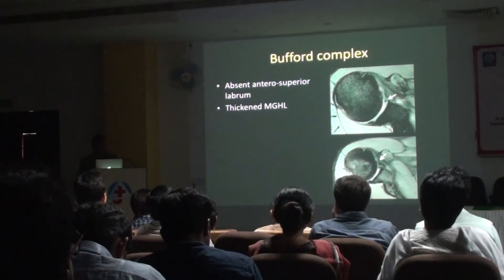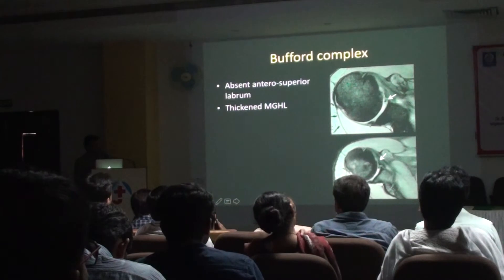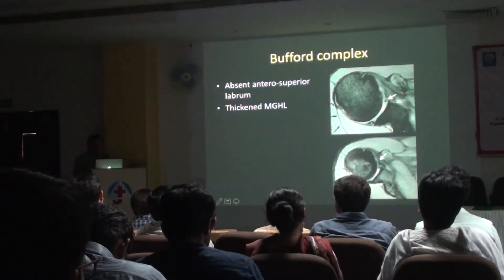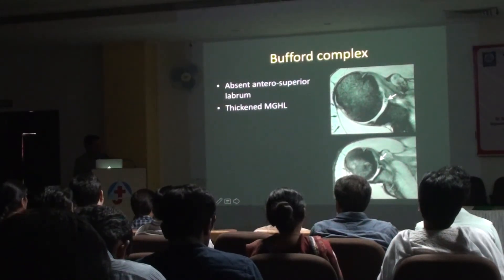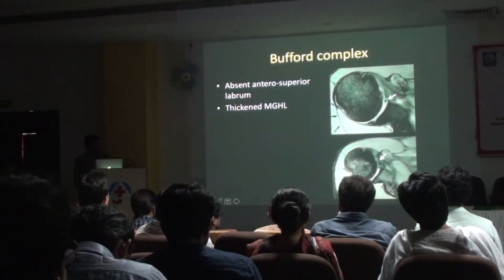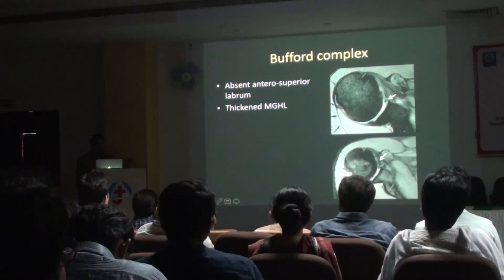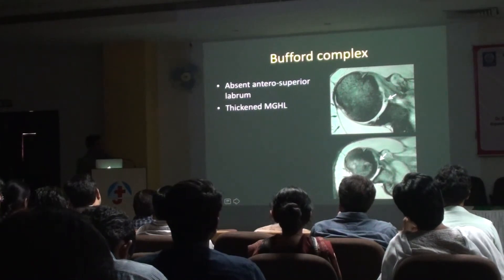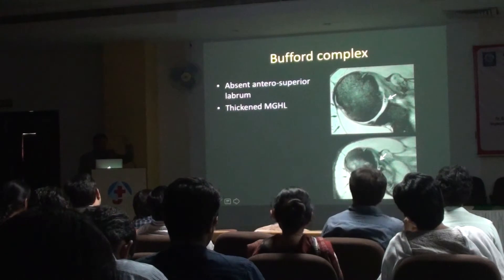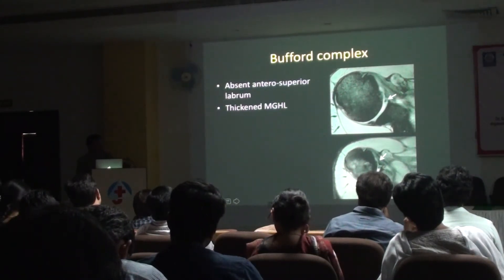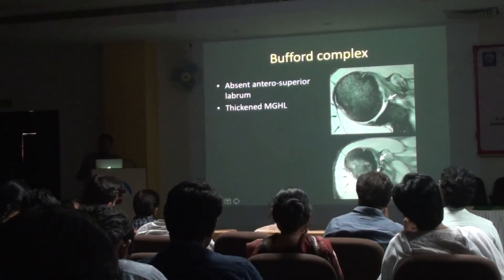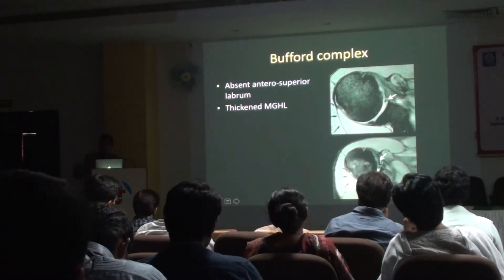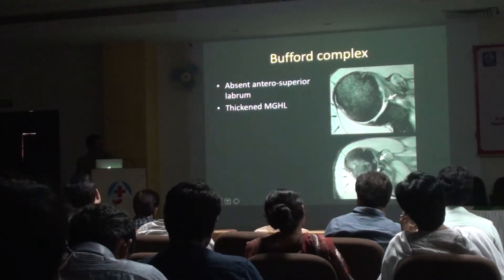The Buford complex is another normal anatomical variant. When scrolling through, normally you see the posterior labrum as a black structure, and you should see a similar black thing anteriorly — but you're not able to see it. There is an absent antero-superior labrum. But if you come down, you see a big, cord-like thickened MGHL. Whenever you don't see labrum antero-superiorly, your eye should automatically go to the lower cuts to check the MGHL. If the MGHL is normal in size, it's not a Buford complex — then think about whether you're dealing with an antero-superior labral tear. If it's cord-like and thickened, that's a Buford complex.